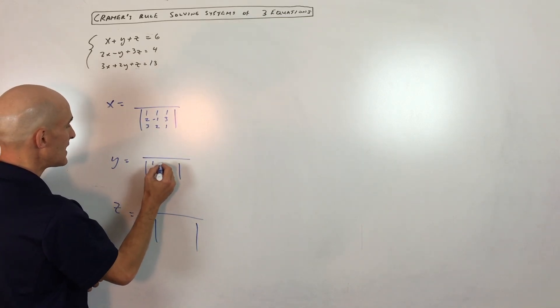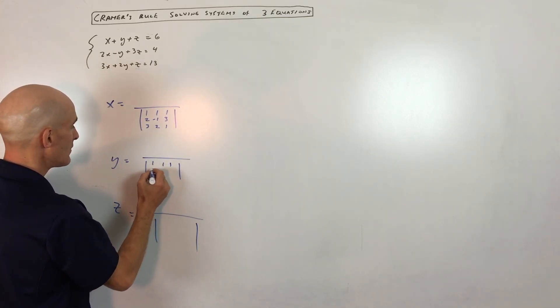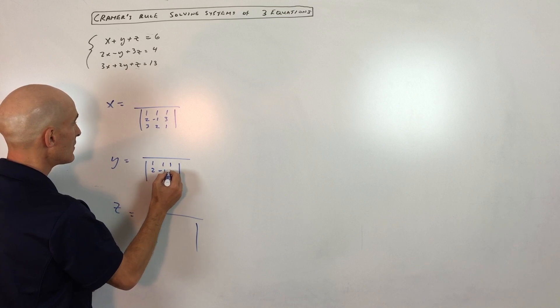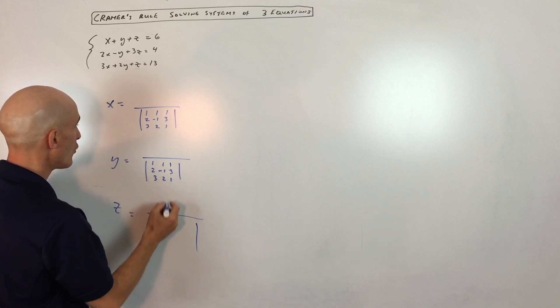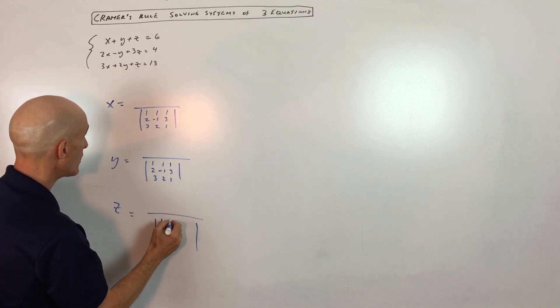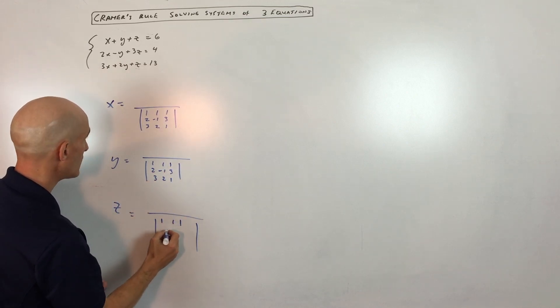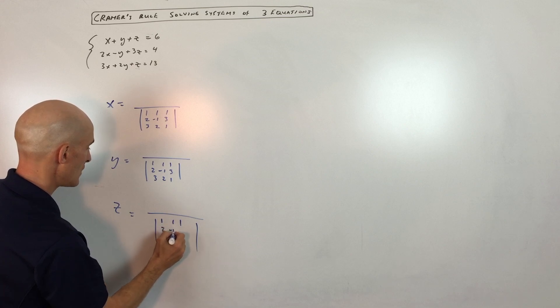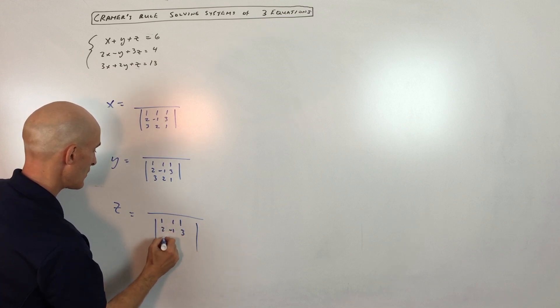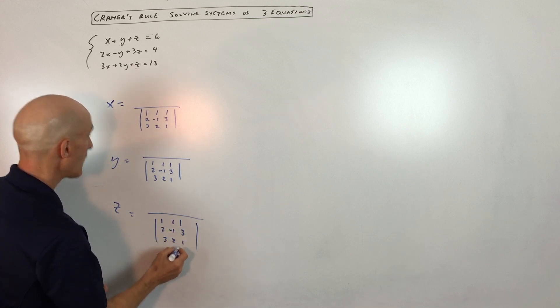It's going to be the same matrix for the denominator, using the coefficients: 1, 1, 1 / 2, negative 1, 3 / 3, 2, 1.